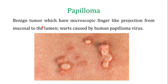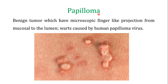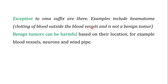Another important benign tumor is the papilloma — a benign tumor that has microscopic finger-like projections from the mucosa to the lumen. Warts are an example, showing microscopic finger-like projections from the mucosa to the lumen. This papilloma is caused by the human papilloma virus, and the '-oma' suffix again refers to the benign tumor.